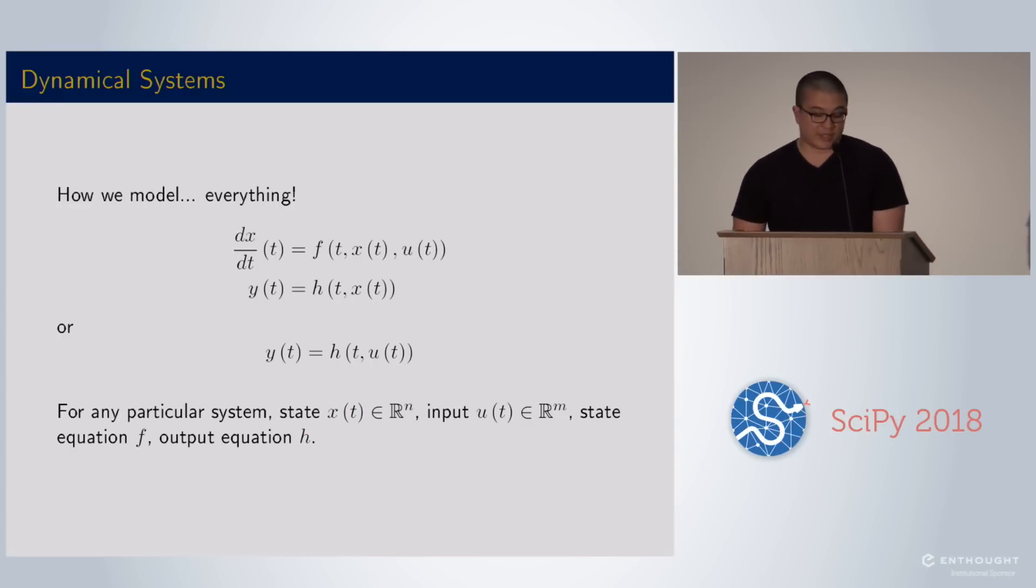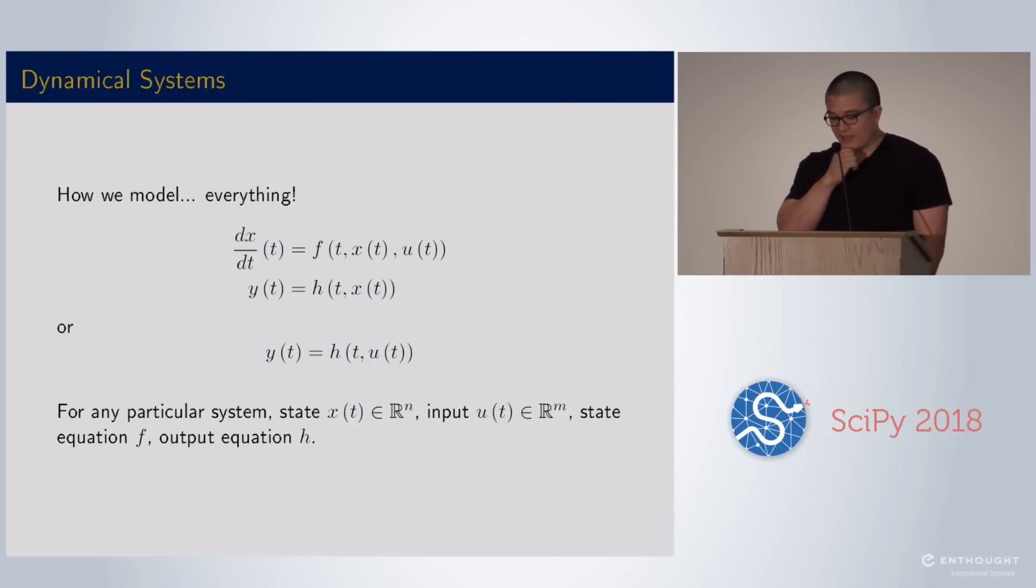For any particular system you could have a state in R^n, an input in R^m, and then possibly that state equation if there is a state and an output equation. One thing you'll note is I don't allow feed through for systems with a state, so that output equation for the system with a state does not have a U in it and that makes some of the integration easier.